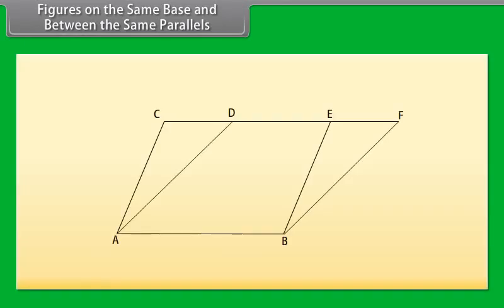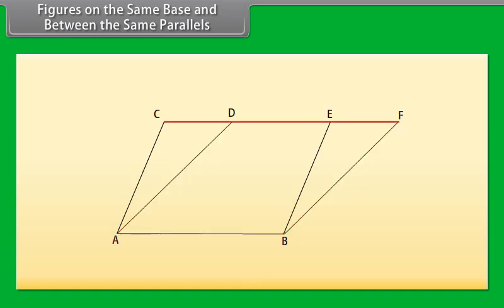Figures on the same base and between the same parallels. Parallelogram ABCE and parallelogram ABFD are on the same base AB. The vertices C and E of parallelogram ABCE opposite to AB, and vertices D and F of parallelogram ABFD opposite to AB, lie on the same line CF which is parallel to AB. So both parallelograms lie on the same base AB and between the same parallels AB and CF.